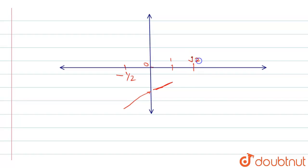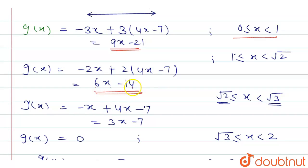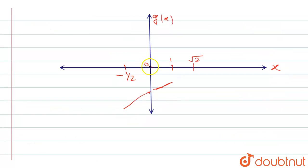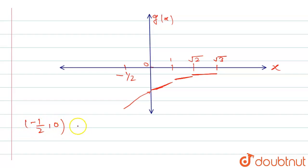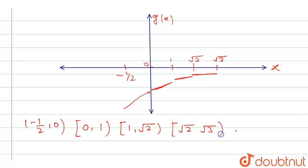Between 1 and √2, g(x) = 6x - 14. At x = 1, this gives 6 - 14 = -8. However, just below √2 the value approaches something below 0, creating a discontinuity. Between 0 and 1, the graph connects from one piece, and from 1 to √2 there is again a jump. The intervals use open/closed endpoints: [-1/2, 0), [0,1), [1, √2), [√2, √3), meaning discontinuities occur at the boundary points.